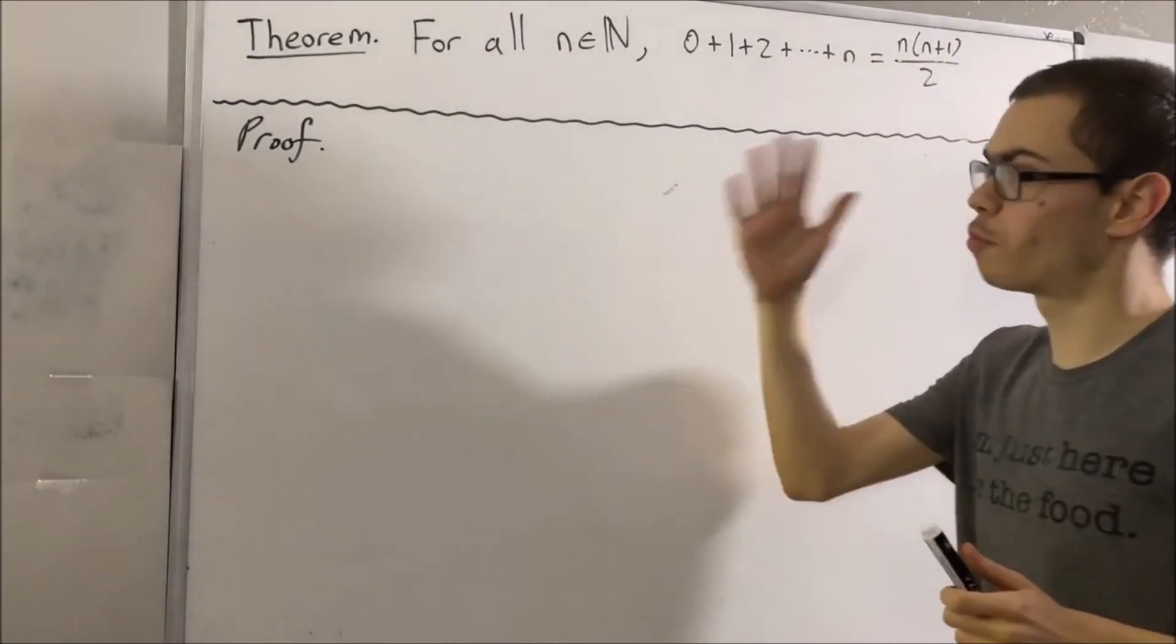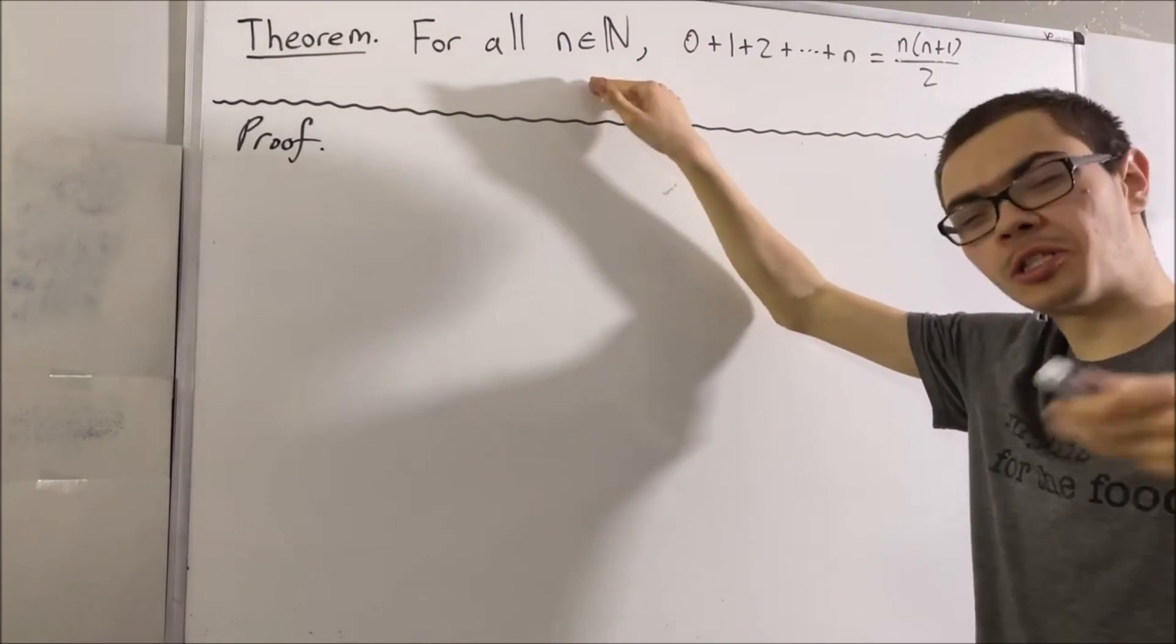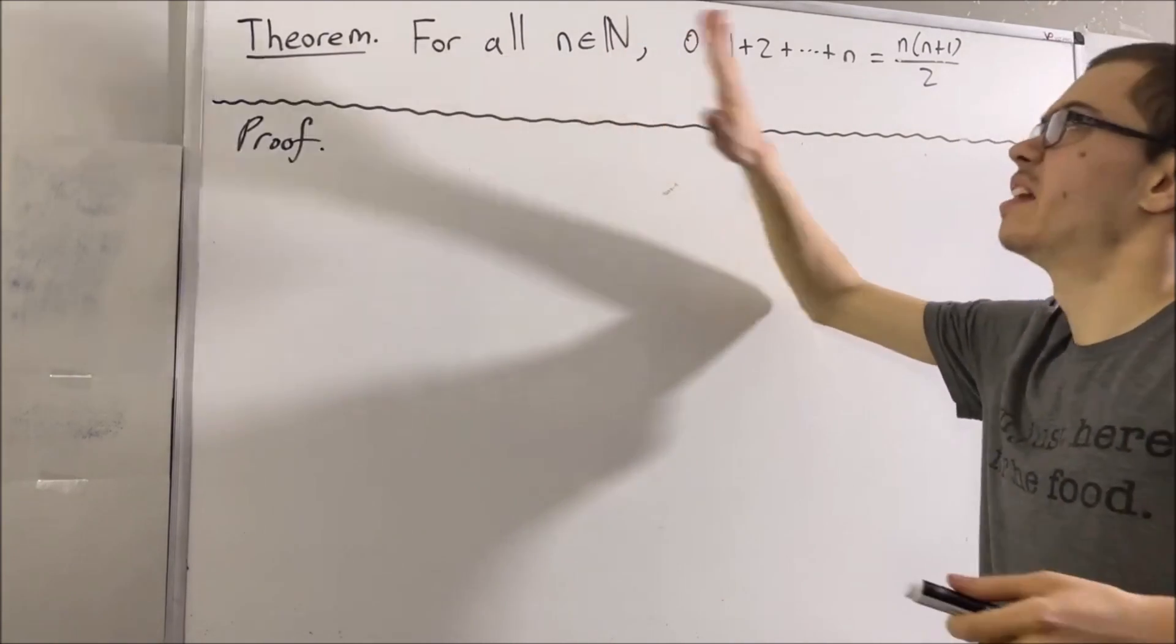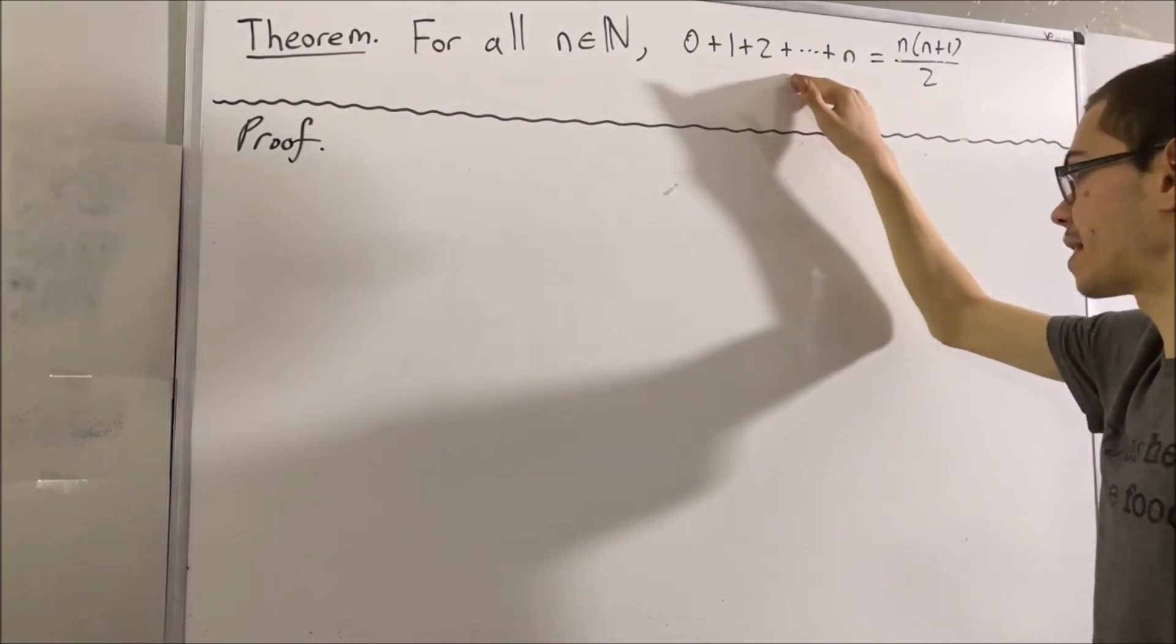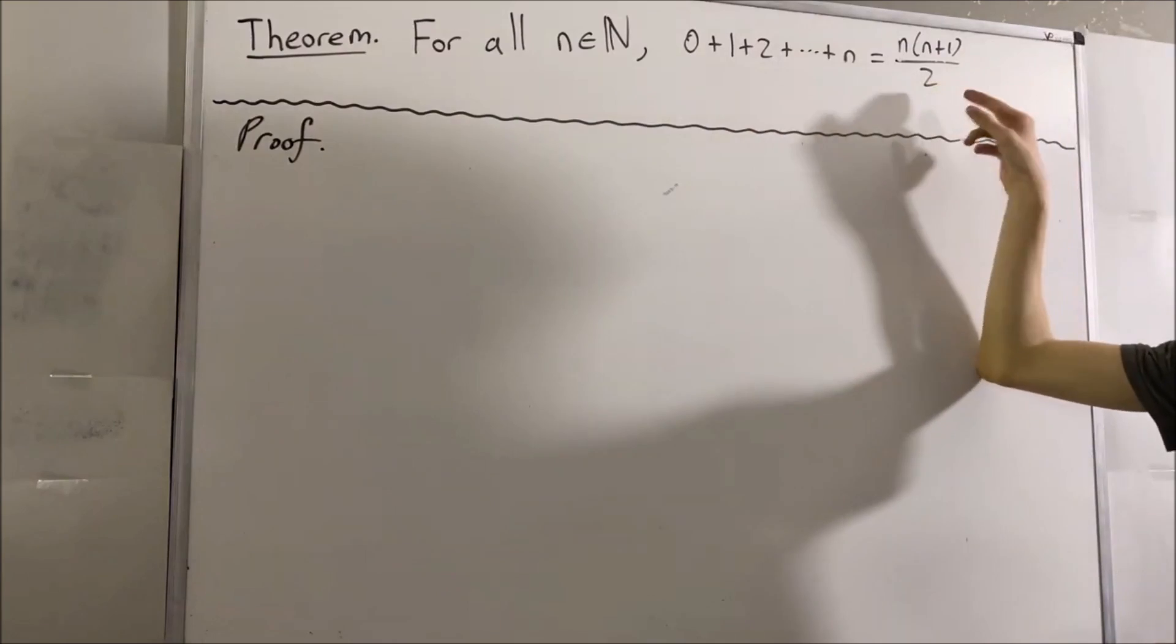Hello. In this video, we are going to prove that for all natural numbers n, that is numbers like 0, 1, 2, 3, and so on, that 0 plus 1 plus 2 plus dot dot plus n is equal to n times n plus 1 over 2.